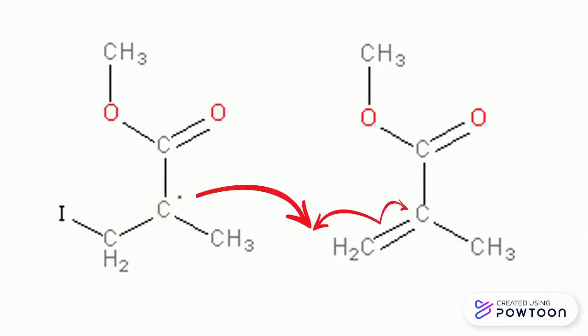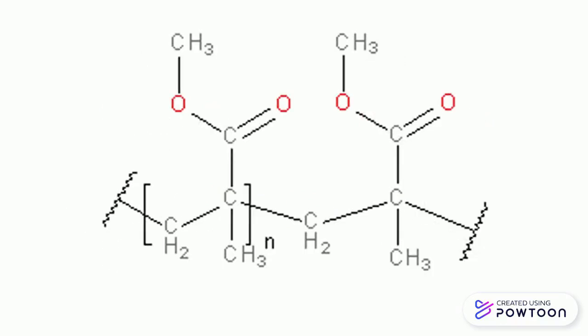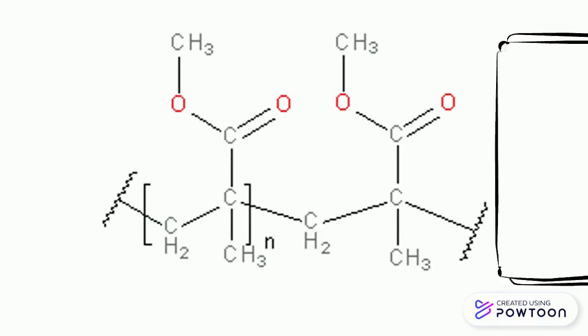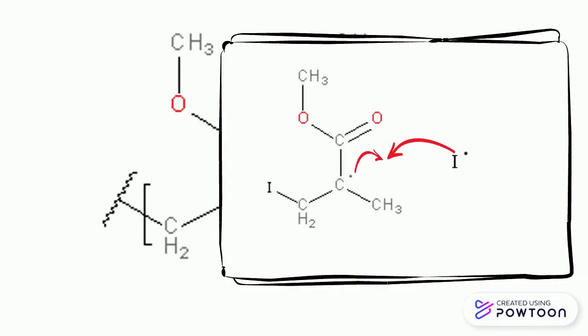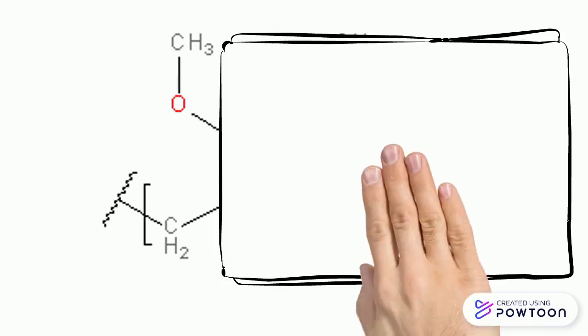This process will repeat and repeat, building up a long chain, which we call a polymer. This chain could be hundreds or thousands of units long. In general, this process will continue until two free radicals meet and bond with each other, terminating the reaction.